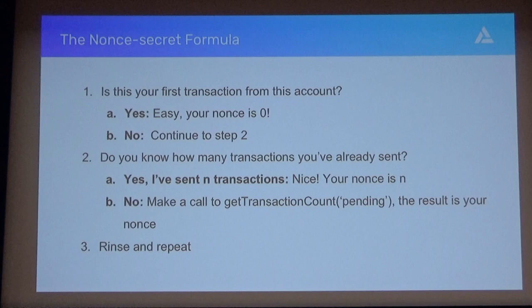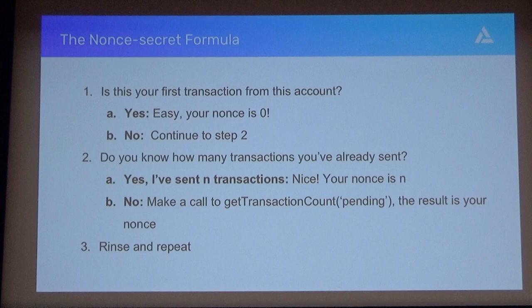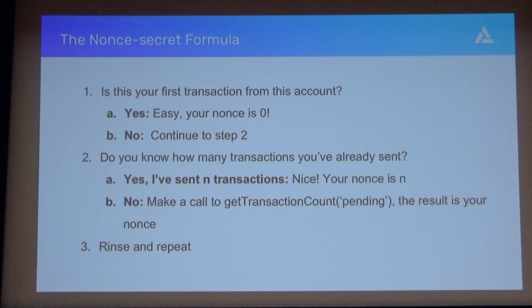So all these things lead us to the non-secret formula for dealing with nonces. You start with the question: is this your first nonce? If so, your nonce is zero—you're good to go, no problems there. If not, if you're keeping track of your nonces, if you know how many transactions you've sent, you're also good to go. If you've sent zero transactions, your nonce is zero. If not, there's a backup plan: you can call something like getTransactionCount pending—the result is your nonce. Super simple, rinse and repeat, your application is well-functioning, and you're off and running.